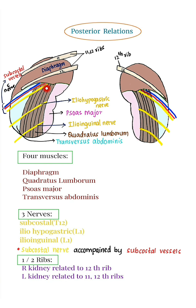The subcostal nerve is accompanied by subcostal vessels. Ribs: the right kidney is related to the twelfth rib, and the left kidney is related to the eleventh and twelfth ribs.